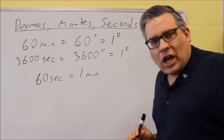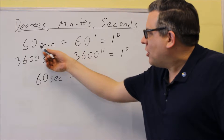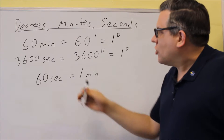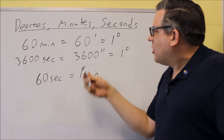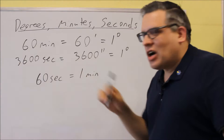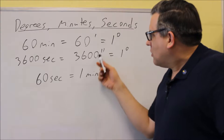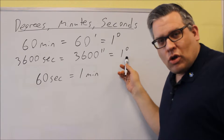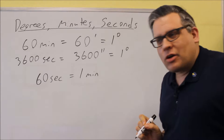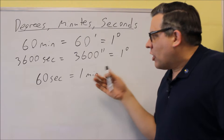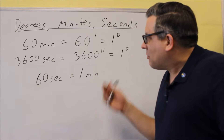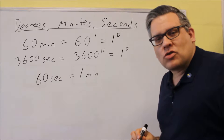Here are the conversions we need to know first. 60 minutes — written with a single mark — is equal to one degree. 3,600 seconds — written with a double mark — is also equal to one degree. And 60 seconds equals one minute, which also comes up when we do these conversions.